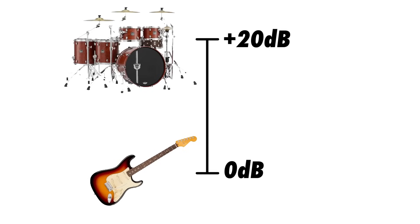A decibel is a way of describing the ratio between two quantities. When using a decibel, you'll always be comparing two values. Saying the drums are 120 decibels is an incomplete statement because the decibel alone has no value. You could instead say the drums are 20 decibels louder than the guitar, and this statement is more meaningful because it draws a comparison between the level of the drums and the level of the guitar. The level of the guitar in this case is the reference point.